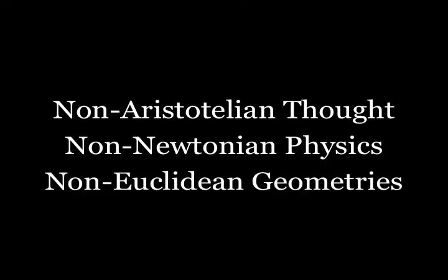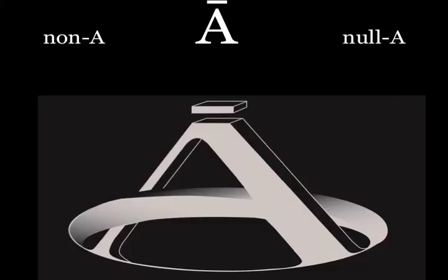The term non-Aristotelian has sometimes been abbreviated as non-A or null-A, or symbolized by the letter A with a bar over it. Of course, non-A or null-A is another way of saying not-A.